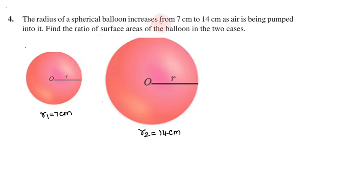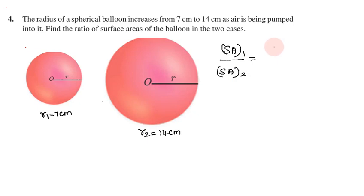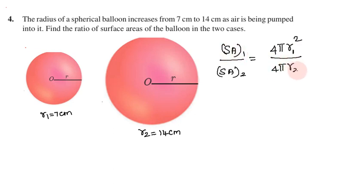We need the surface area of the balloon in each case. The surface area of a sphere is 4πr². So surface area in case 1 divided by surface area in case 2 equals 4πr1² divided by 4πr2².